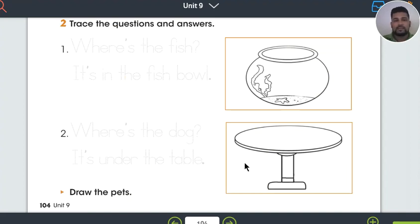Alright. In the last activity, en la última actividad, para terminar, vamos a trazar las preguntas con las respuestas. Trace the questions and the answers. For example, where is the fish? Vamos a trazar. Trace, escribir. Where is the fish? It's in the fishbowl. ¿Qué hay que hacer aquí? No hay un fish in the fishbowl. Entonces, necesitan dibujarlo. Where is the fish? You need to draw.